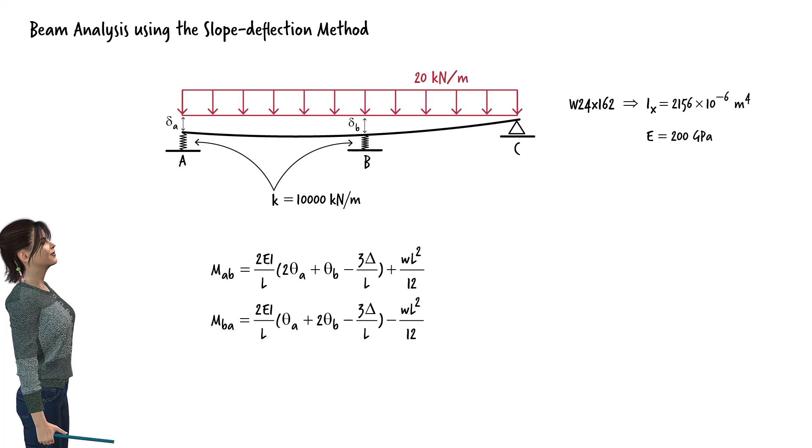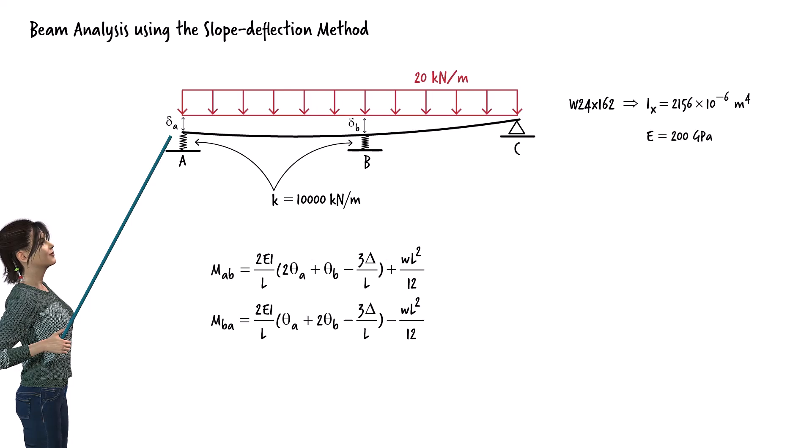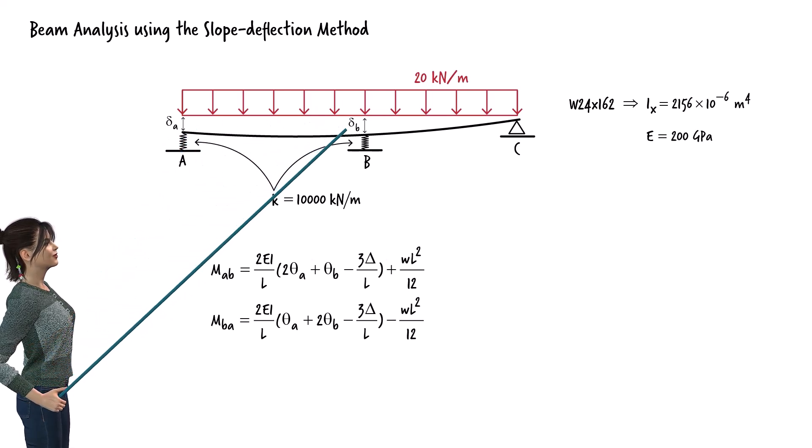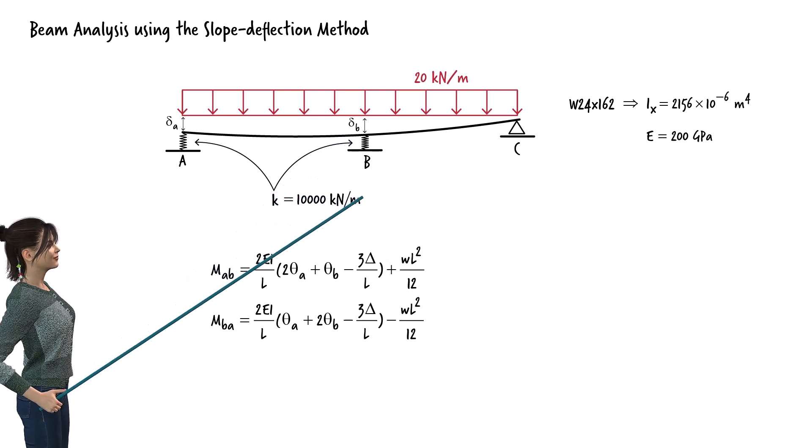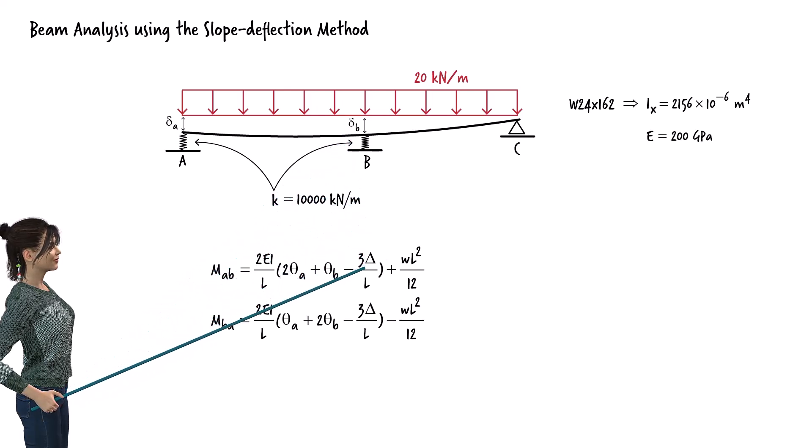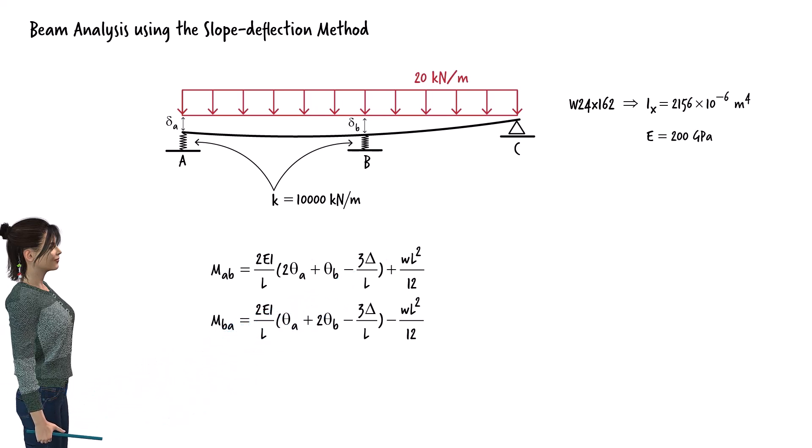The axial deformation for each bearing is unknown. Let's designate this deformation as delta A, and use delta B for the deformation at support B. So, the relative displacement for segment AB is delta A minus delta B. Given that W equals 20, the slope deflection equations for segment AB become